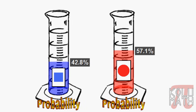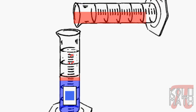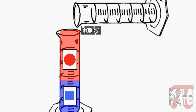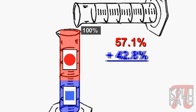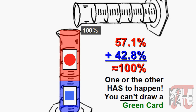Something interesting to notice: if we take the probability of getting a red and add it to the probability of getting a blue, we get 100%. That makes sense because if we add the two percentages together we get about 100% — a little rounding error, but about 100%. That's because one or the other has to happen. You cannot draw a green card; it's impossible. You're either going to get a red or a blue — you have a 100% chance of getting either one.